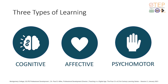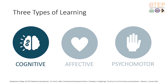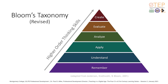Critical thinking fits into the three domains of learning, specifically the cognitive domain. The cognitive domain involves knowledge and the development of intellectual skills. It includes the recall or recognition of specific facts, procedural patterns, and concepts that serve in the development of intellectual abilities and skills. There are six major categories of cognitive process, starting from the simplest to the most complex.